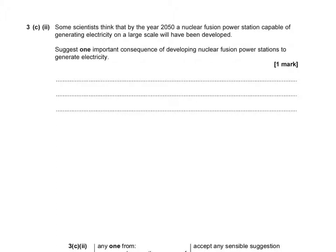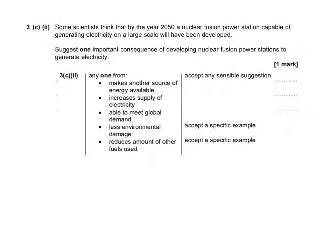The next part of the question asks: some scientists think that by the year 2050 a nuclear fusion power station capable of generating electricity on a large scale will have been developed. State one important consequence. There are lots of valid consequences: it provides another source of energy and reduces demand on other energy sources; it doesn't generate large amounts of radioactive waste; it would be a reliable source; it increases supply of electricity; it can meet global demand; and it reduces environmental damage. The mark scheme says 'accept any sensible suggestion,' so if you're unsure whether to award yourself the mark, please see your teacher.